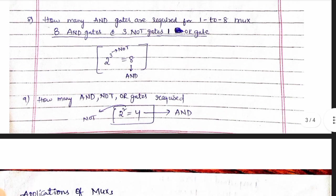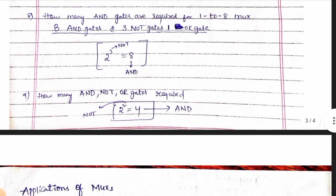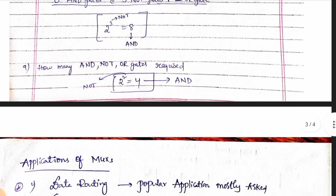Let me give you an example. How many AND, NOT, and OR gates are required? For a 1-by-4 mux, you need 4 AND gates, 2 NOT gates, and 1 OR gate.